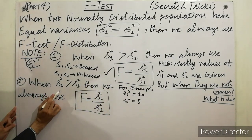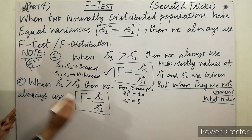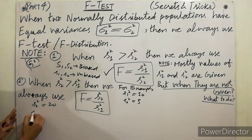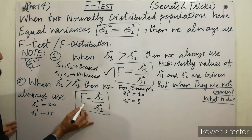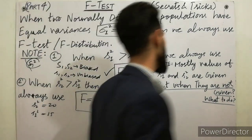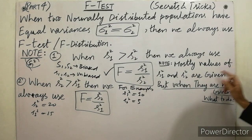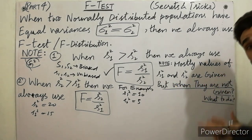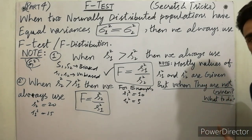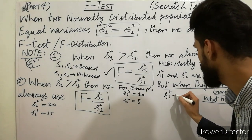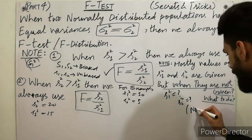Second point: when S2² is greater than S1², then we always use F = S2² / S1² — which is a very important point that nobody tells you. For example, if S2² = 20 and S1² = 15, since S2² > S1², we use F = S2² / S1². In most problems, values of S1² and S2² are already given. But in some cases they are not given — so what to do?